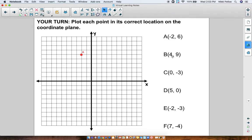Point B is at positive 4, positive 9. So we're going to go positive 4 to the right, and then up 9 for Y. And there is point B.